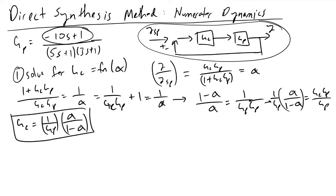we will find that ultimately gc is equal to 1 over gp times alpha over 1 minus alpha. This is the starting point for all direct synthesis methods, but in this example this is where things get interesting.